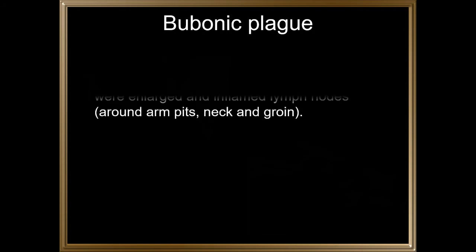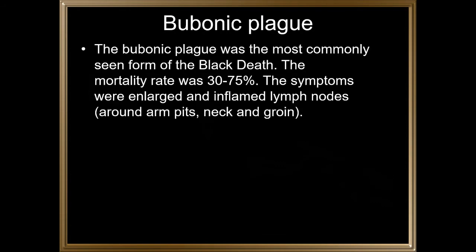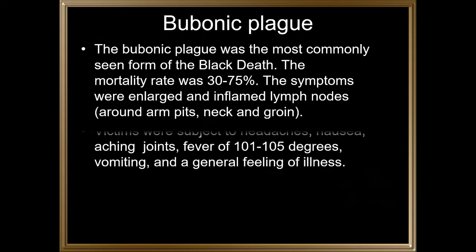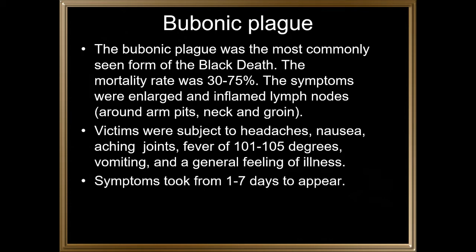The bubonic plague was the most commonly seen form of the Black Death, with a mortality rate of 30 to 75%. Symptoms included enlarged and inflamed lymph nodes, especially around the armpits, neck, and groin. Victims also experienced headaches, nausea, aching joints, fever of 101 to 105 degrees, vomiting, and a general feeling of illness. Symptoms took one to seven days to appear.